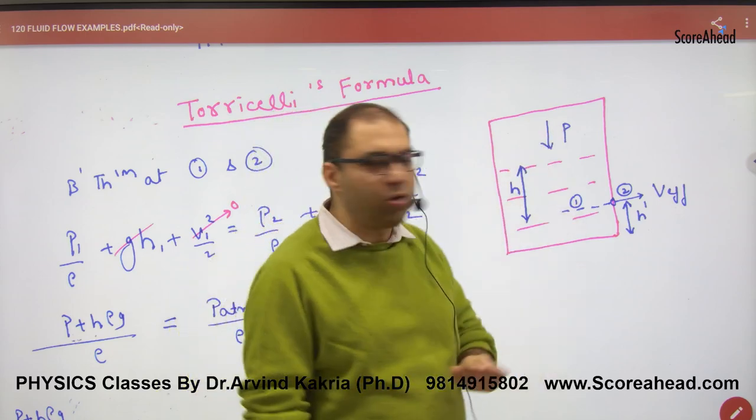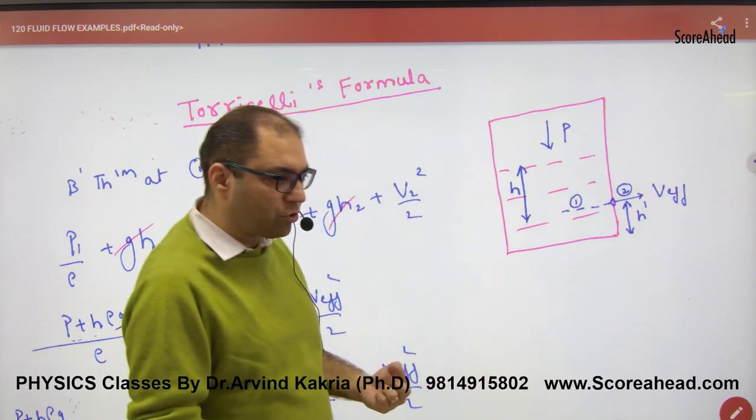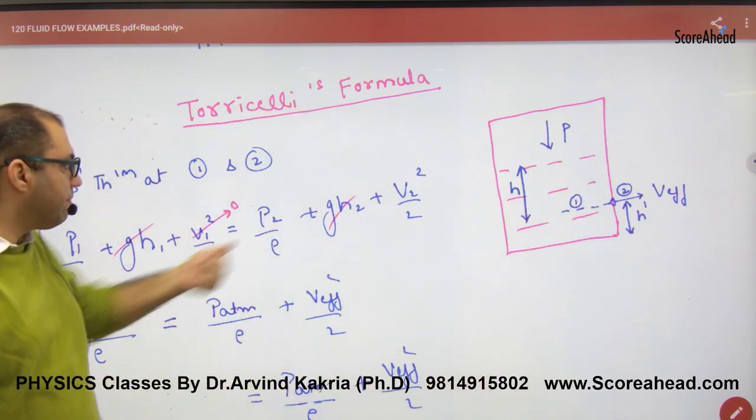If we close it, the pressure is p and atmospheric pressure is not present here. What is the velocity of efflux and what is the liquid level here? So we take points one and two where Bernoulli's equation applies.